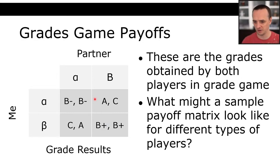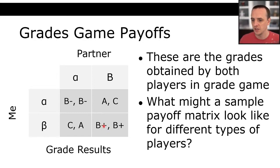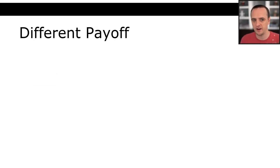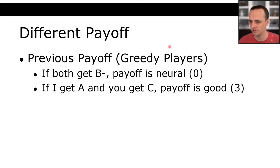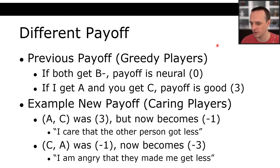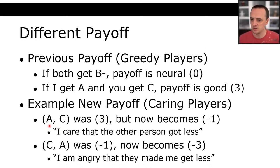Here's a game where the players don't have the same choices — like a soccer penalty kick scenario. Player 1 can choose Top or Bottom; Player 2 can choose Left, Center, or Right. So S1 = {T, B} and S2 = {L, C, R}. For example, the utility for player 1 choosing Top with player 2 choosing Center is 11, and the utility for player 2 when player 1 chooses Bottom and player 2 chooses Left is 4.